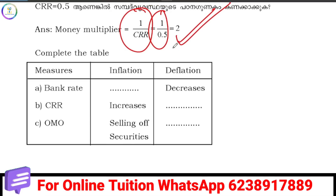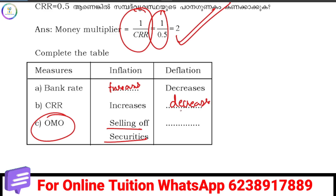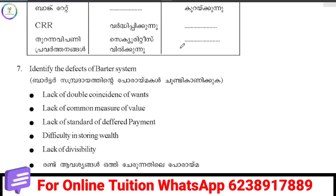Then Bank Rate. In an inflation variant, Bank Rate increase. That means in a deflation variant, Bank Rate decrease. What is CRR? CRR is correct. In a deflation variant, RBI CRR is correct. Then Open Market Operations — in inflation, securities are used.